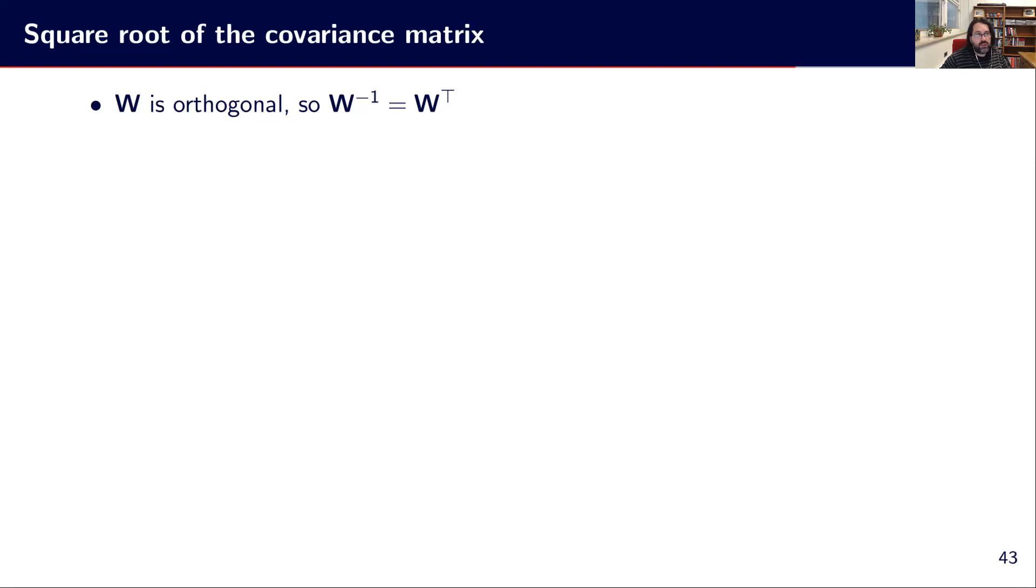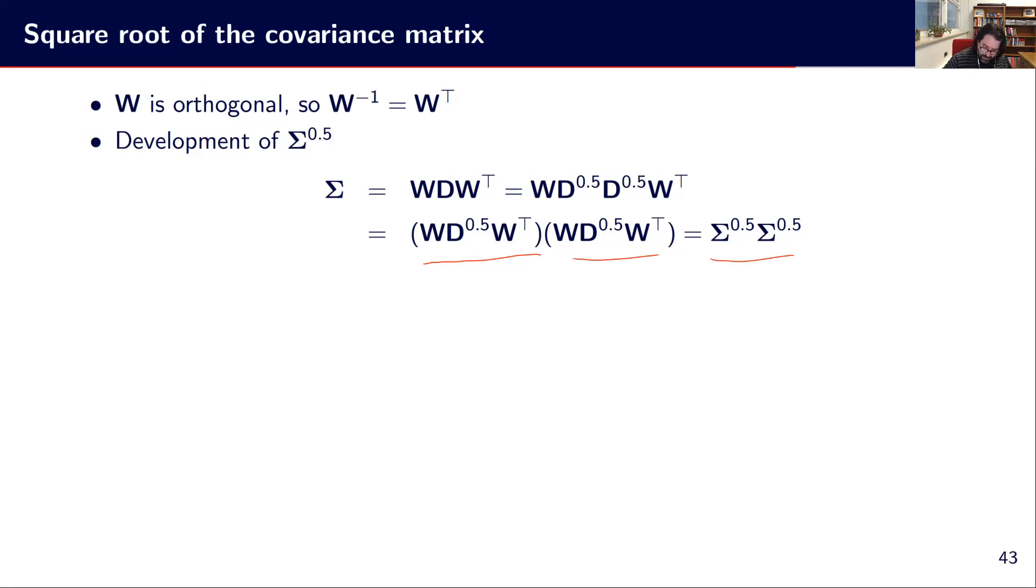We know that W is orthogonal, so the inverse of W equals the transpose of W. Now we will develop what we call Σ^(0.5). Σ is described by WDW^T. We can say that WDW^T corresponds to WD^(0.5)D^(0.5)W^T. We're decomposing the matrix D, which is made only of the eigenvalues on the diagonal. If we develop further, we multiply by W^T W in the middle, and we get WD^(0.5)W^T multiplied again. So we're decomposing Σ in the product of these two things.